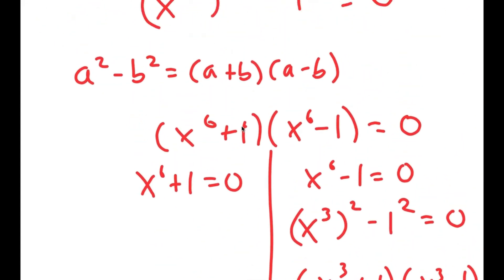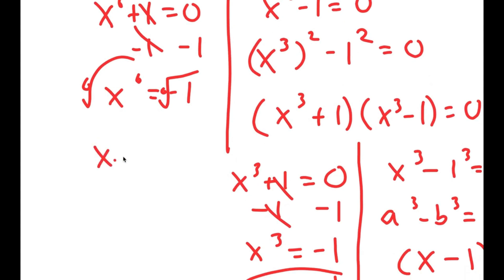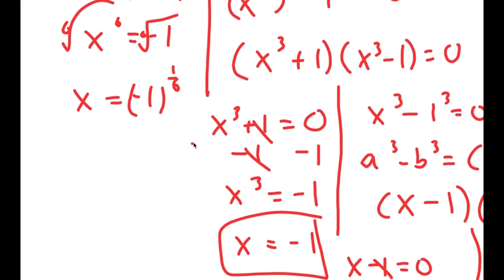Now for x to the power of 6 plus 1 equals 0, I'm going to subtract 1 on both sides. So x to the power of 6 equals negative 1, and if I take the 6th root I get x equals the 6th root of negative 1, which is equal to negative 1 to the power of 1 over 6.